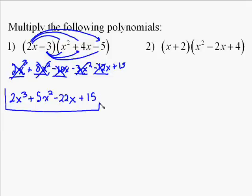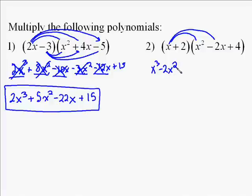In the second example, we start the same way. We're going to multiply the first term times all three terms in the other polynomial. So x times x squared, which is x to the third. x times a negative 2x, which would give us a negative 2x squared. And then x times 4, which would give us a positive 4x.